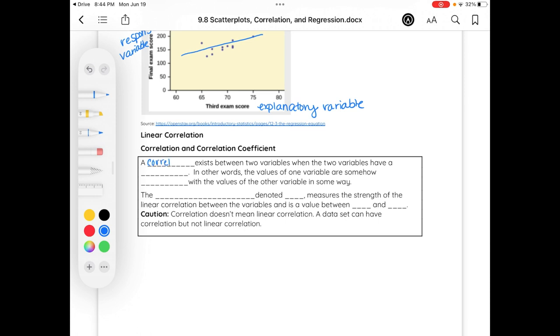Putting this together then, a correlation exists between two variables when the variables have a relationship. In other words, the values of one variable are somehow related with the values of the other variable in some way.